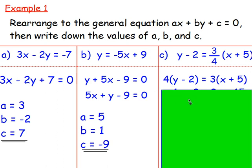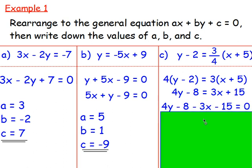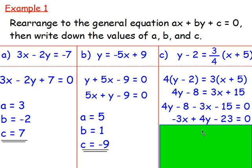From there, multiply the brackets out: 4y take away 8 equals 3x plus 15. We know from here we just want to get every single term onto the left hand side. Subtract 3x from both sides, subtract 15 from both sides — or move the 3x over so it becomes minus, and move the 15 over so it becomes minus. With the negative 3x, the negative 8 and the negative 15 giving negative 23, and the 4y stays as 4y — so we get x, then y, then a number.